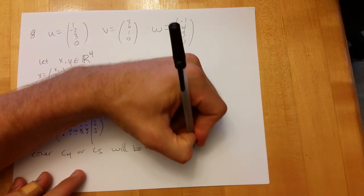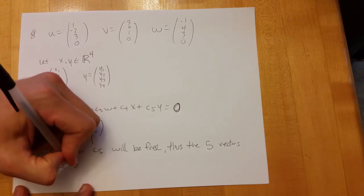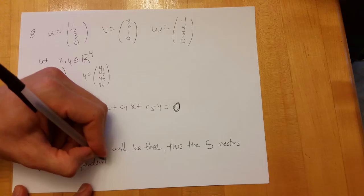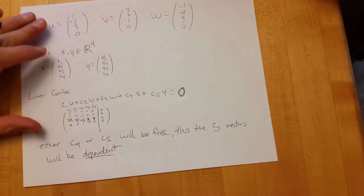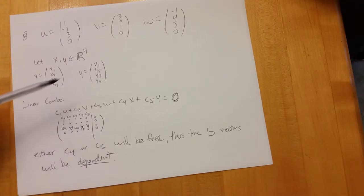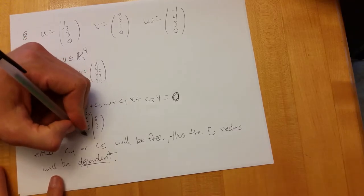So the answer is not five — maybe four. You basically need the same number of vectors as dimensions, and they need to be independent. In four-dimensional space you need four vectors. With five vectors you have too many to be independent. Think about it this way: you have five vectors giving five columns, but only four rows. So most likely C5 is going to be free.